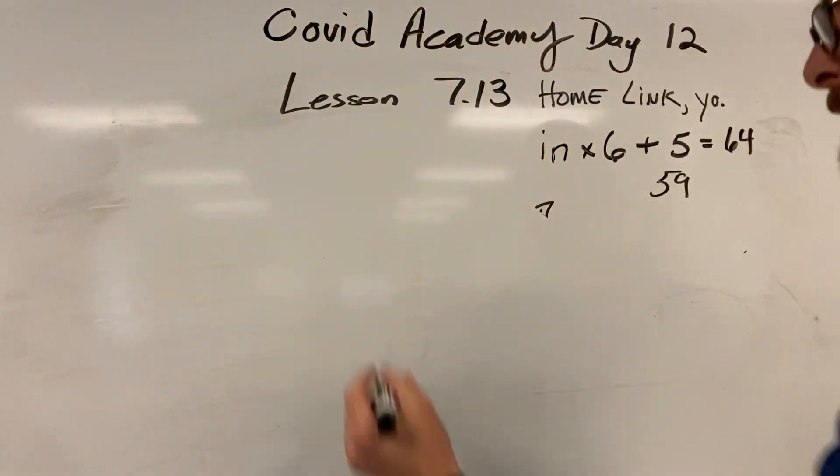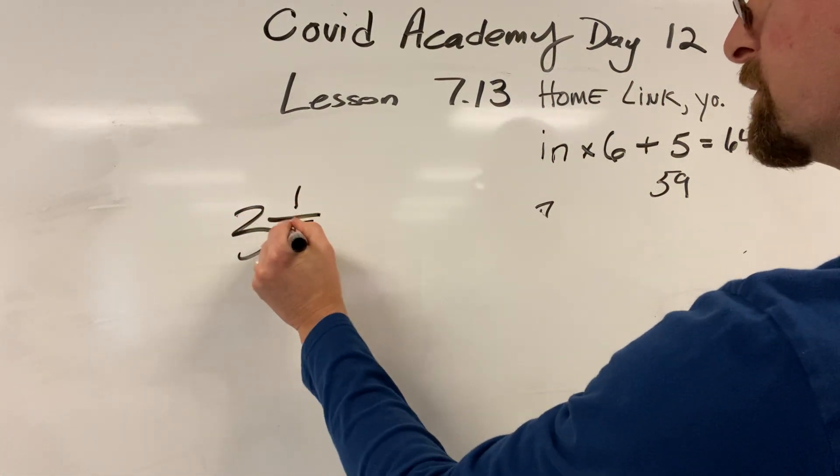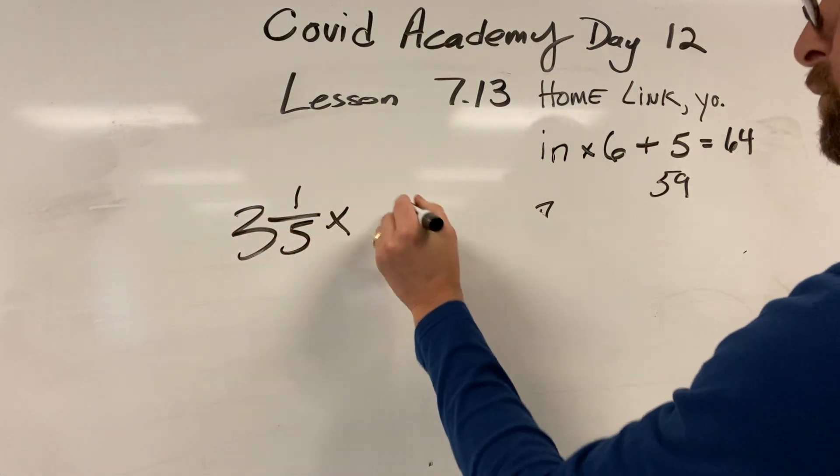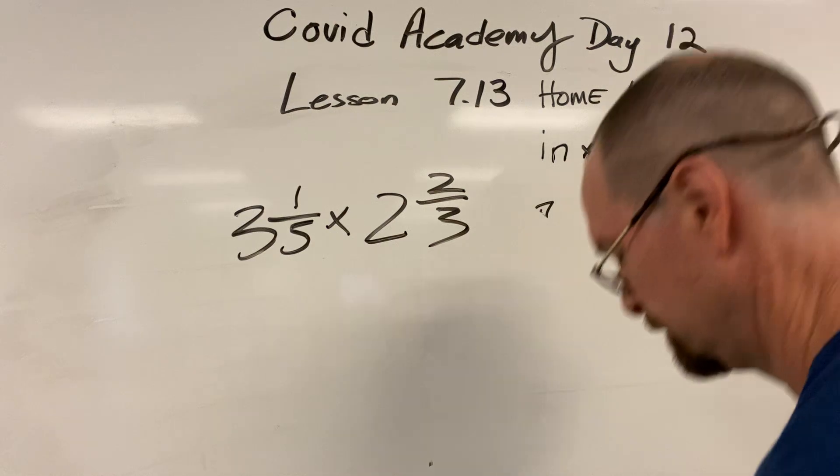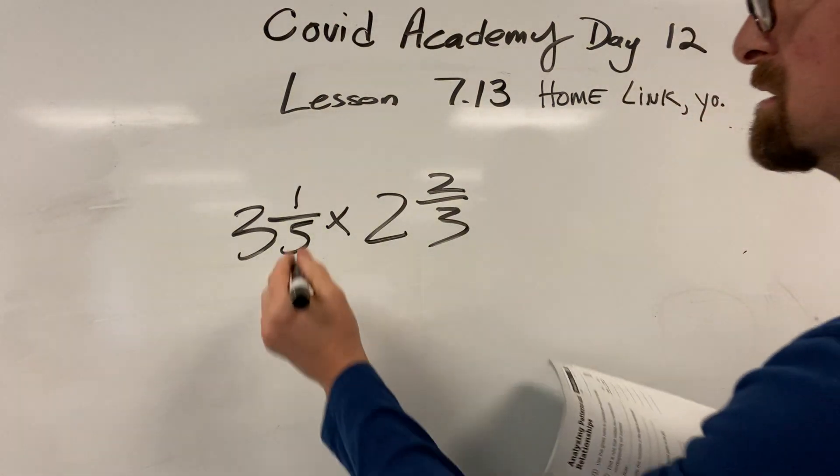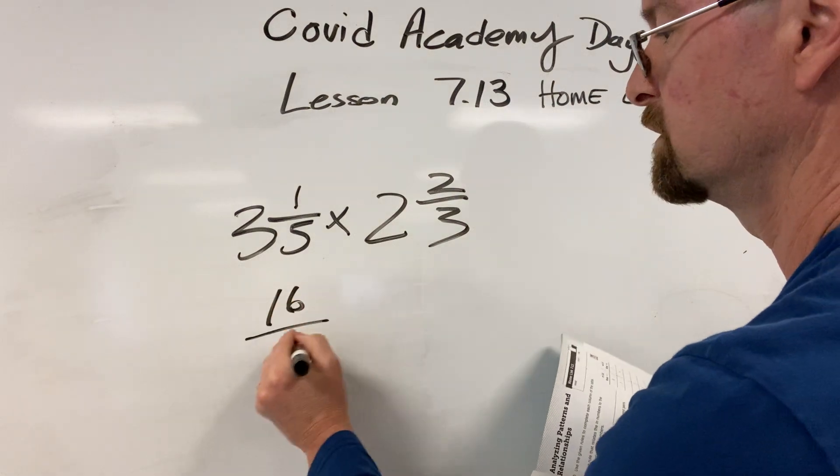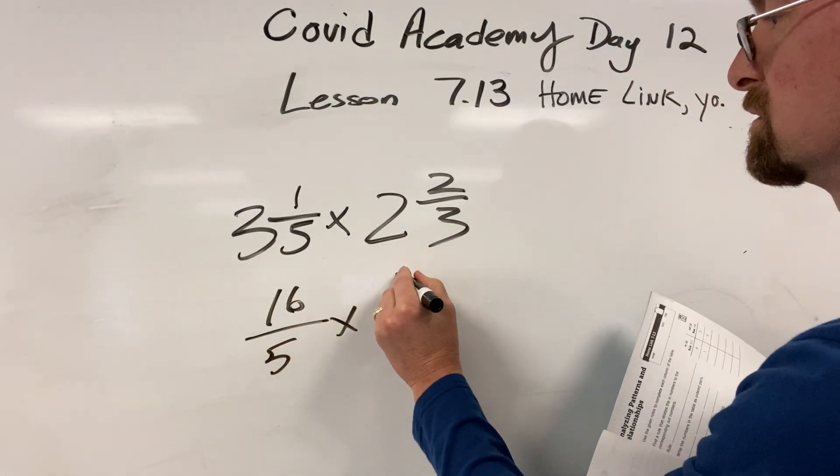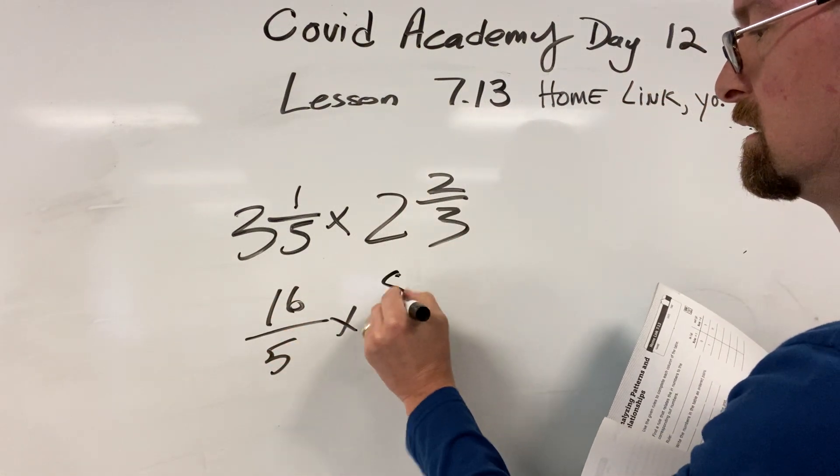Practice time. 3 and 1 fifth times 2 and 2 thirds. Make them improper—that's the way I like it. 16 fifths times—3 times 2 is 6—8 thirds.